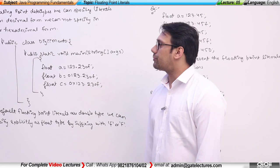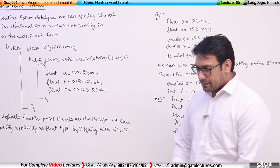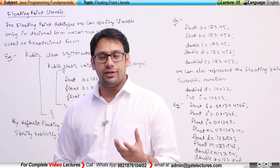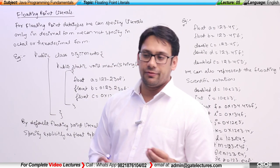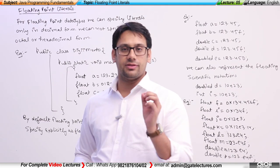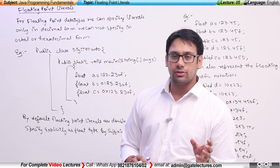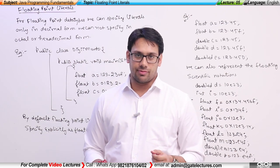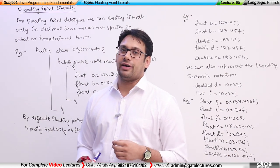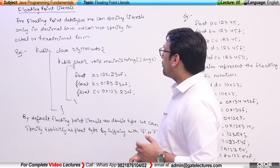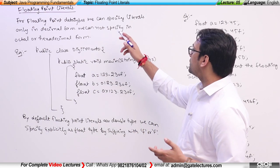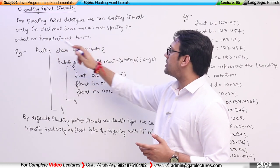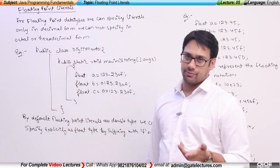Here we are discussing floating point literals. There is a basic difference between floating point literals and integer literals. In case of integer literals, whenever we prefix the integer number with 0 that means the number is in octal form, and if we prefix the number with 0x that means the number is hexadecimal. The same thing is not valid for float — for floating point data types we can specify literals only in decimal form; we cannot specify them in octal or hexadecimal form.